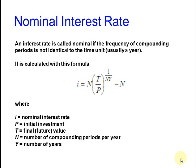An interest rate is called nominal if the frequency of compounding periods is not identical to the time unit, which is usually a year. It is calculated with this formula: i is the nominal interest rate, P is the initial investment, T is the final or future value, N is the number of compounding periods per year, and Y is the number of years.